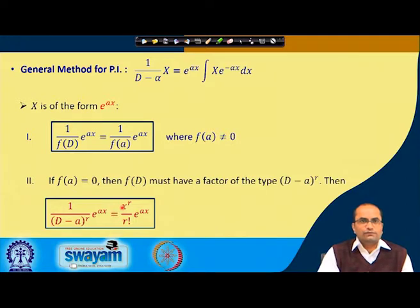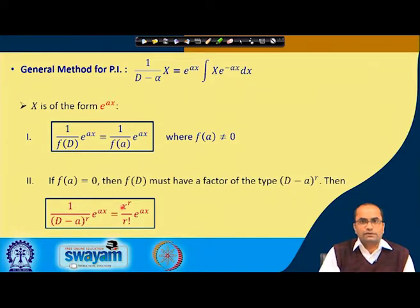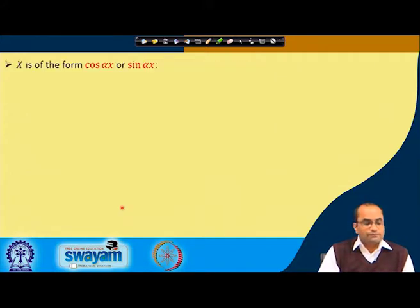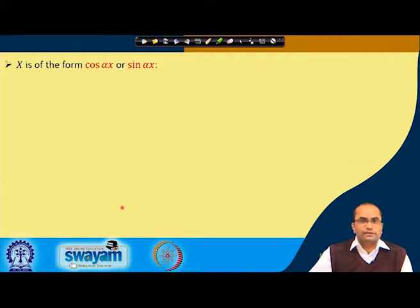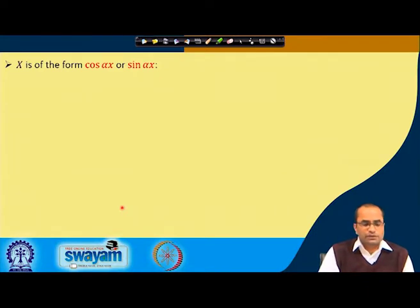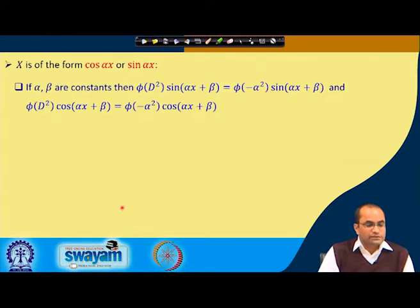These are direct formulas which we can apply to find the particular integral when the right-hand side is an exponential function like e^(ax). Today we will continue our discussion for when X, the right-hand side, is of the form of a cosine or sine function.